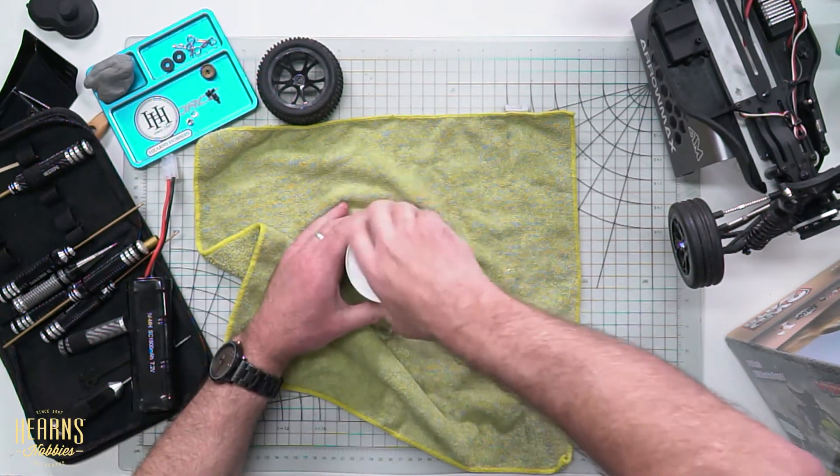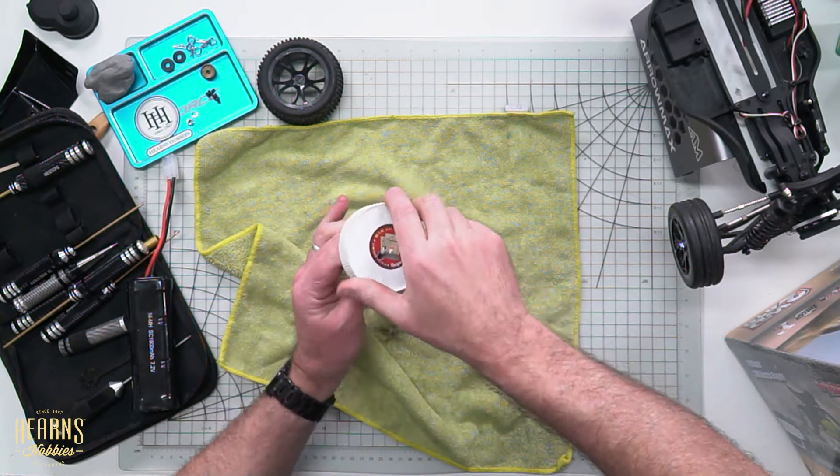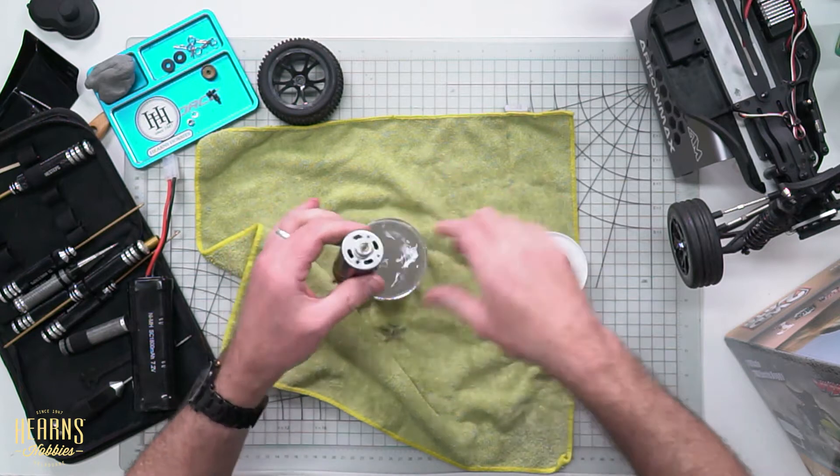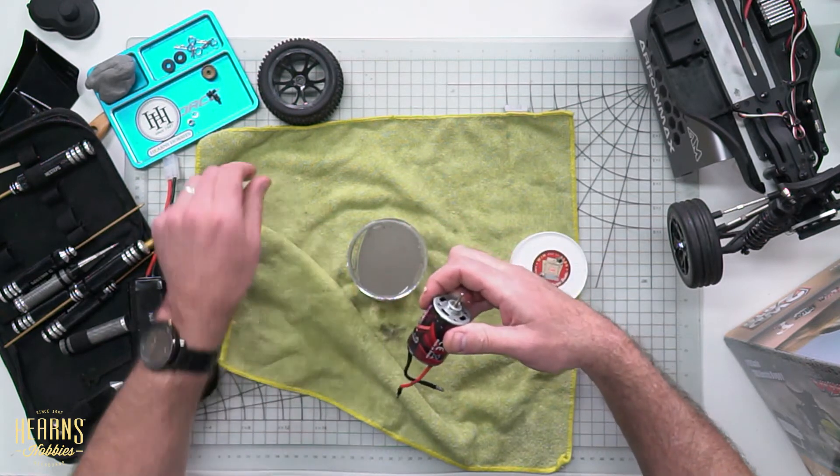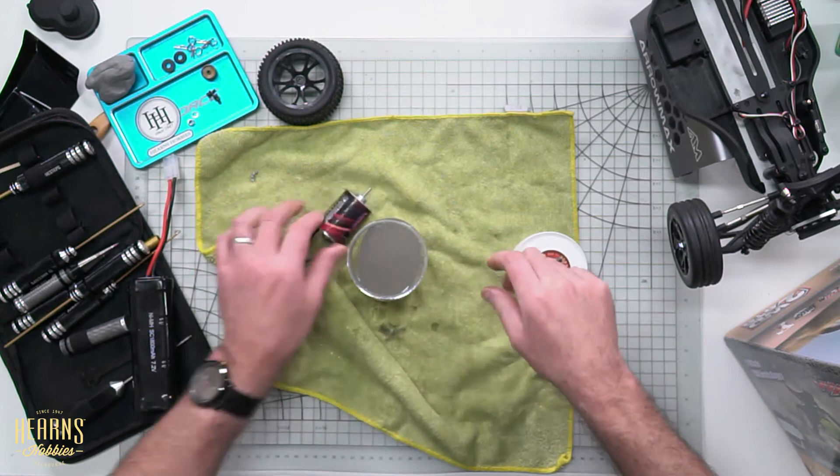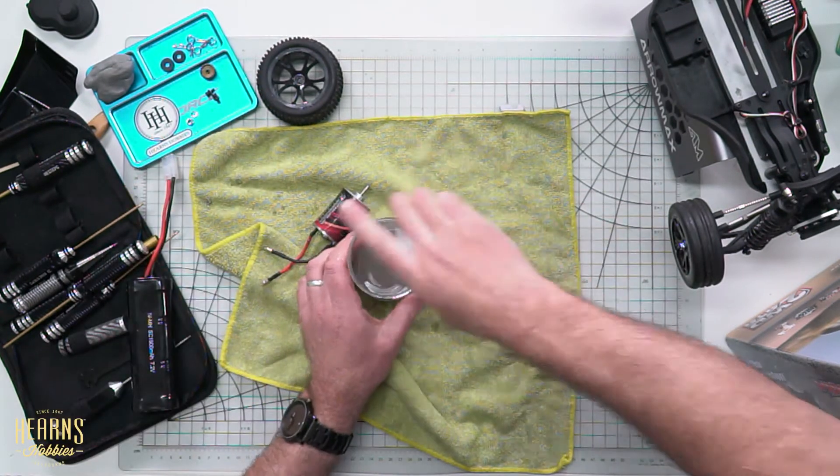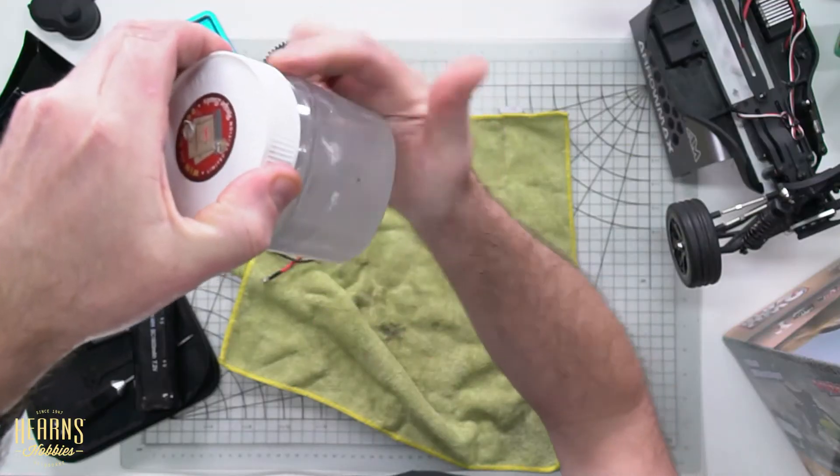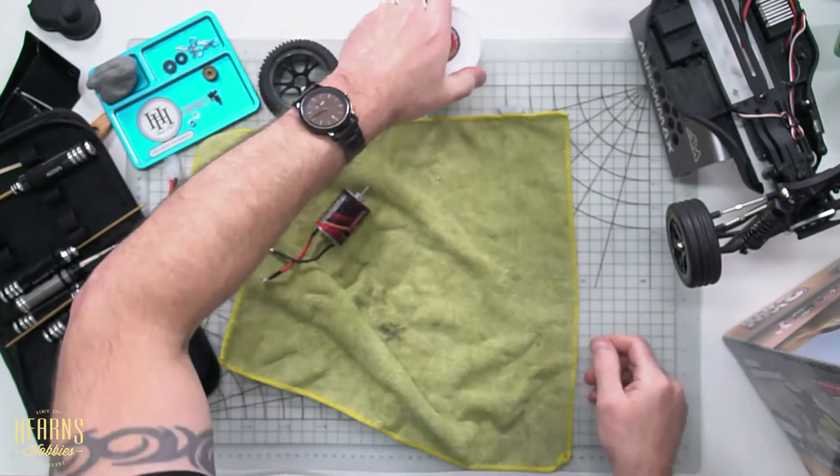So then I'm going to take the motor out, and you can see I'll hold it up to the camera - how much rubbish and dirt has actually come out of it. That's only seven, six or seven batteries worth. It's got a big black ring of carbon and dirt and stuff that's come out of there.